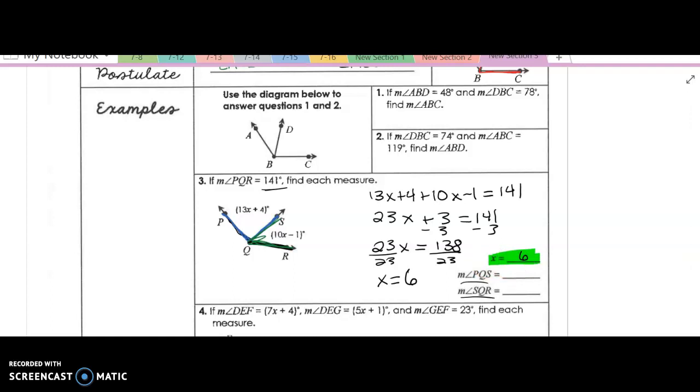Okay, now we're asked here, well, how do I find the measure of PQS? Well, all I do is I just plug in x where I have PQS right here. Okay, so here I have it as 13 times 6 plus 4. Okay, this gives me 82 degrees.